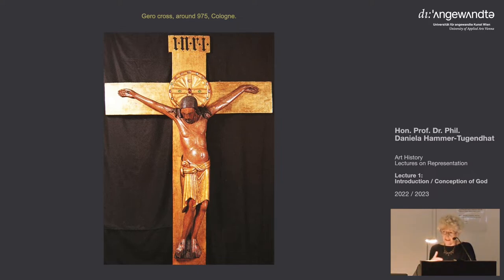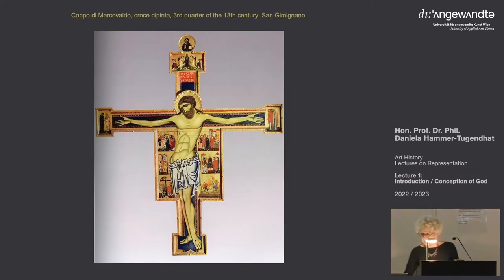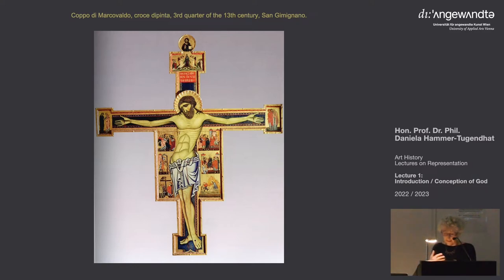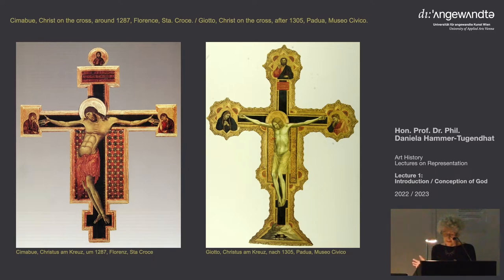Because first it is Christ overcoming death, but here with the Gero Cross it is Christ suffering. In Italy you have Christ with open eyes on the Croce dipinta until the 13th century — so very long. It took quite a time for this change to really take hold. Then with Cimabue in the 13th century, Christ on the cross looks as we know it. And then we have this image of the crucifix with the suffering Christ ubiquitously — with Rogier van der Weyden and with Grünewald in the 16th century.